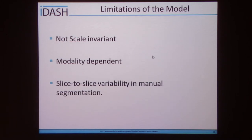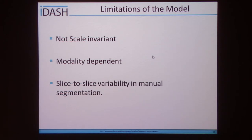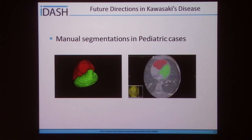One limitation of the project is that it is currently not scale invariant — for groups where heart size would vary considerably, we would need to train the shape model on different datasets. The method is also currently modality dependent, due to intensity differences between MRI and CT images, requiring separate trained models. Additionally, as segmentations are done manually, there is slice-to-slice variability. For future directions, we are currently manually segmenting pediatric CT scans affected by Kawasaki disease to build a shape model to automatically detect ventricles from future CTs.